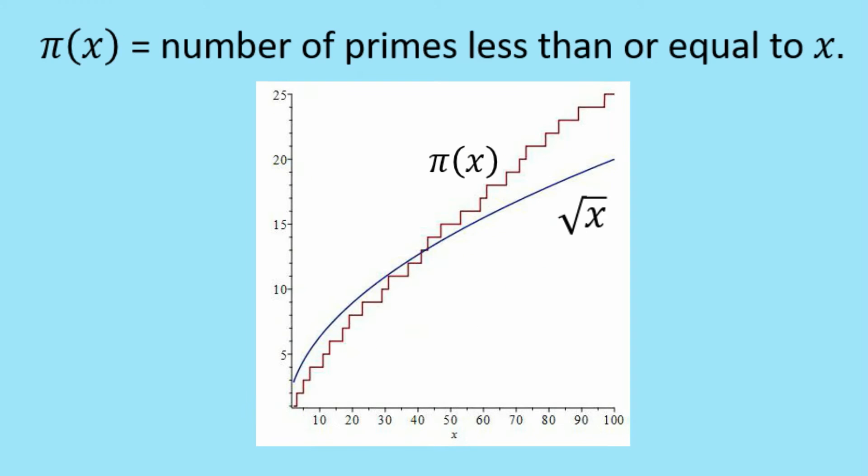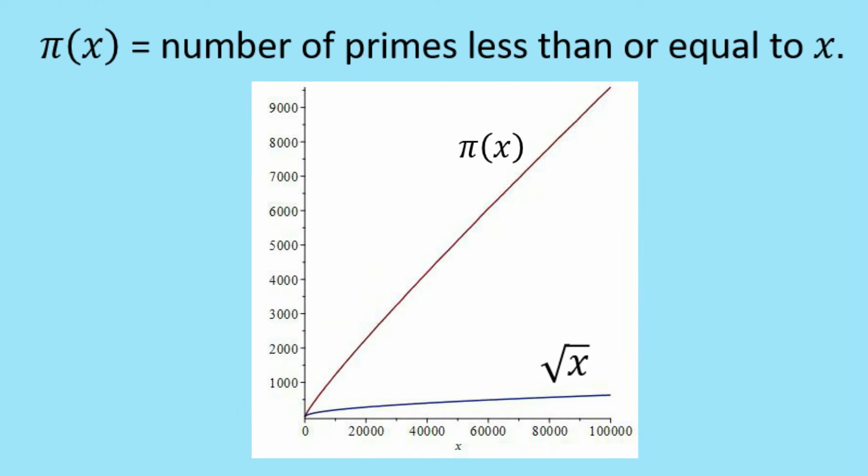Might try the square root of x. Is that a good approximation? Well, out to x equals 100, it's pretty good. But once again, when you go out to x equals 100,000, it's not very good at all.